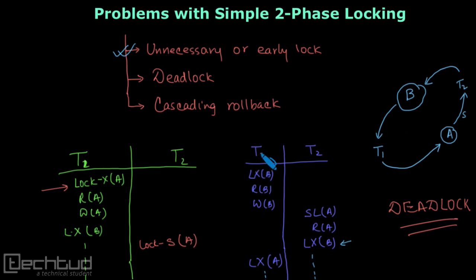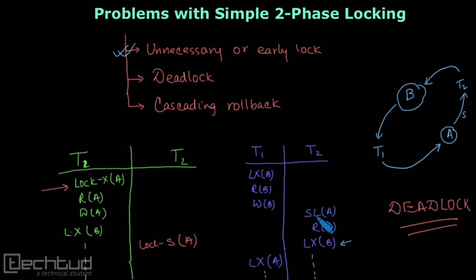You can see there is a waiting cycle: T2 is waiting for B and T1 is waiting for A. This is a situation of deadlock. Both are in the growing phase, acquiring locks, and they got trapped into this deadlock. So two-phase locking has the problem of deadlock.